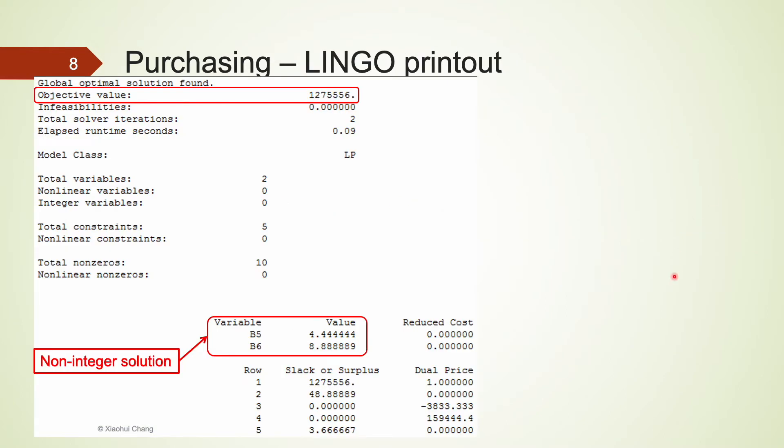After entering our model to LINGO, here is the printout we received. The optimal solution is to purchase 4.44 757 jets and 8.88 767 jets. I'm sure you will not submit this solution to your supervisor. The solution makes no sense at all. What is the point of buying a fraction of an airplane?